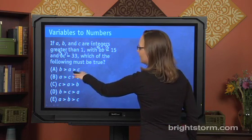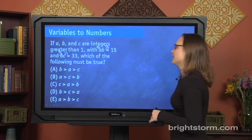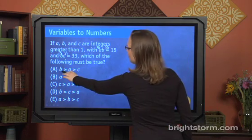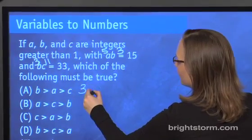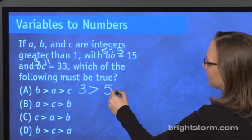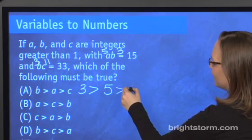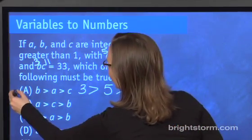For instance, to know whether b is greater than a is greater than c is true, got to put the numbers in. So let's do that. What was b? b was 3. So 3 is greater than a. That was 5. Is greater than c, which was 11. Not so much. 3 is not greater than either of those. So we'll get rid of that one.